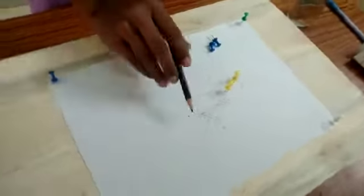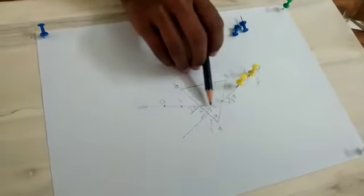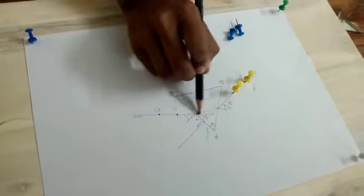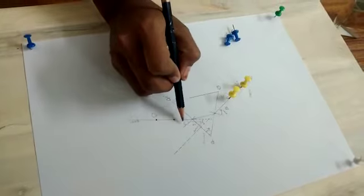After removing the prism and also pins, with the help of these dots, we extend the angle of emergence and it is denoted as I2.